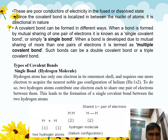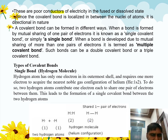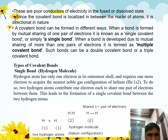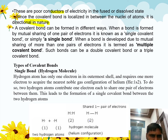Covalent compounds are poor conductors of electricity, because they exist in molecular form. Since the covalent bond is localized between the nuclei of the atoms, it has directional characteristics — meaning all covalent compounds have directional geometry.